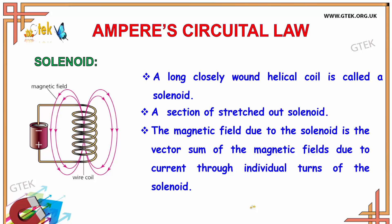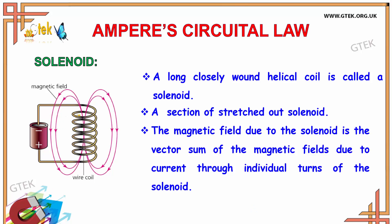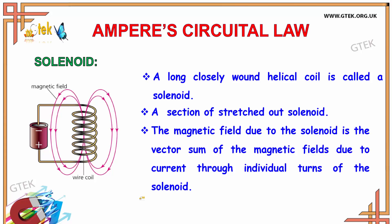Now let us see about the solenoid. What is a solenoid? A long closely wound helical coil is called a solenoid. You could see the picture where the wire coil is in a helical structure. The magnetic field due to the solenoid is the vector sum of the magnetic fields due to the current through individual turns of the solenoid.